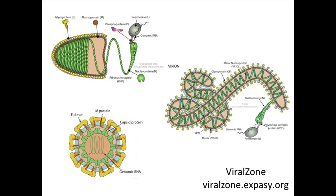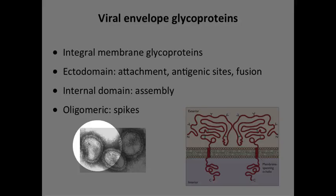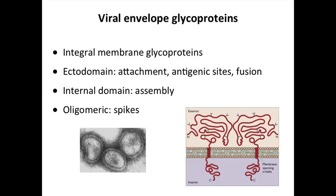So these are two examples of helical nucleocapsids that can be enveloped. You can also have an icosahedral capsid within an envelope. You could take this kind of structure with RNA in it and put an envelope around it, and that's what's shown here. This is a virus related to yellow fever virus. It's got an icosahedral shell, the RNA is inside, but then there's a membrane around it as well. So membranes can go over both kinds of capsids — icosahedral or helical nucleocapsids.